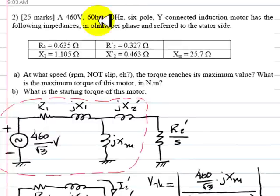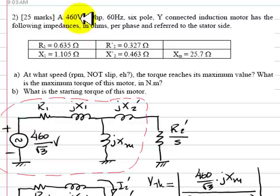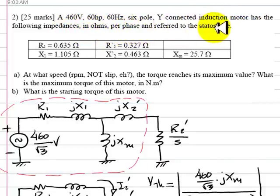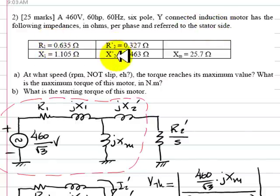This is an exercise on an induction motor. This is a three-phase, 460 volts, 60 horsepower, 60 hertz, 6-pole Y-connected induction motor. It has the following impedances in ohms per phase referred to the stator side: R1, X1, R2', X2', and Xm.